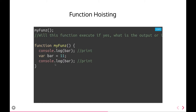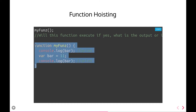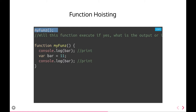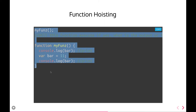Function hoisting: in ES5, variables are hoisted to the top and function definitions are also hoisted to the top. Because functions are hoisted, you can call a function before even defining it. I'm defining the function here and calling it from above — that's allowed because the function definition is hoisted to the top of the page, so the runtime already knows that myFunction is defined somewhere.